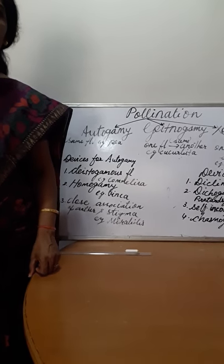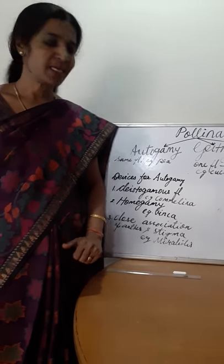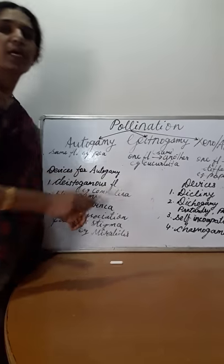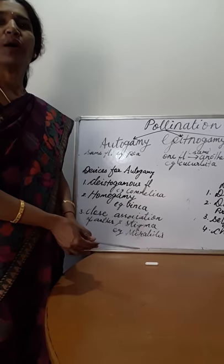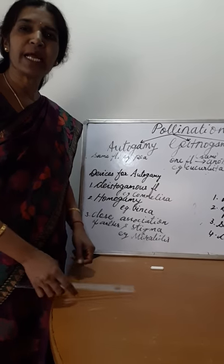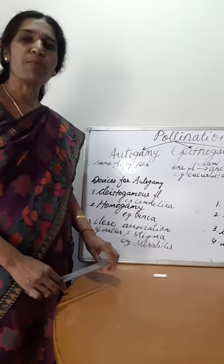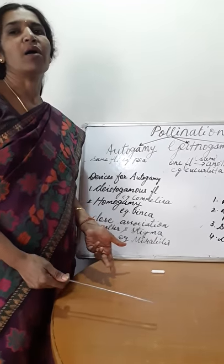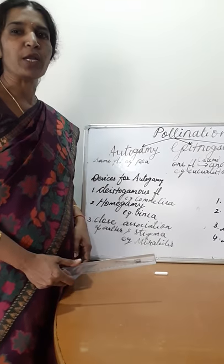Hello students. Today's topic is pollination. Pollination is the transfer of pollen grains from the anther to the stigma of the same flower or another flower. This is known as pollination.